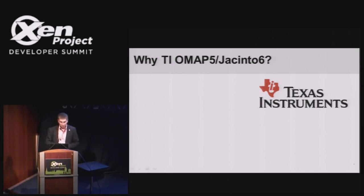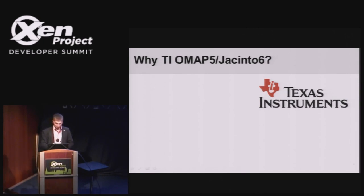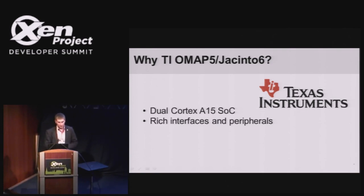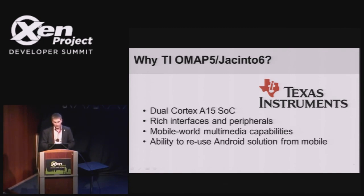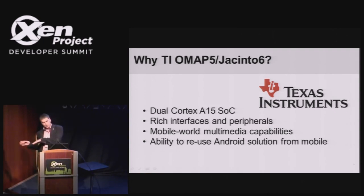So why did we decide to go with OMAP5? It's a dual Cortex-A15 SoC, like Exynos. It has very good interfaces and peripherals and mobile world capabilities. There's a ready-to-use solution from mobile for automotive — J6 is actually an automotive CPU, and OMAP5 was a mobile CPU.